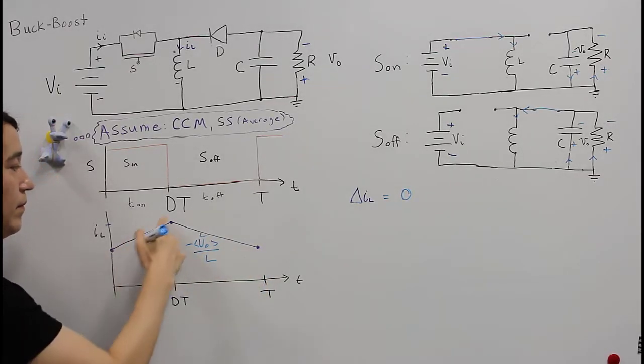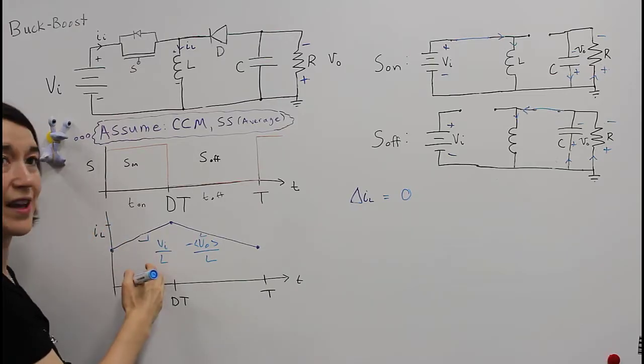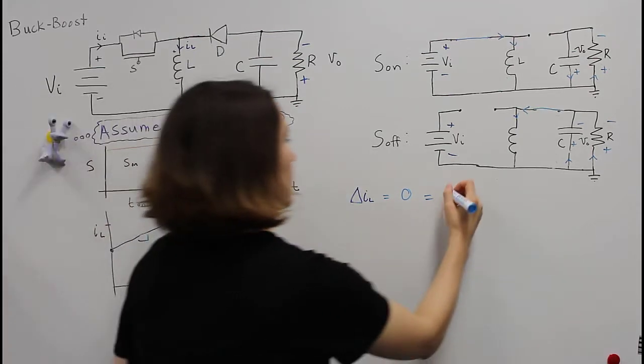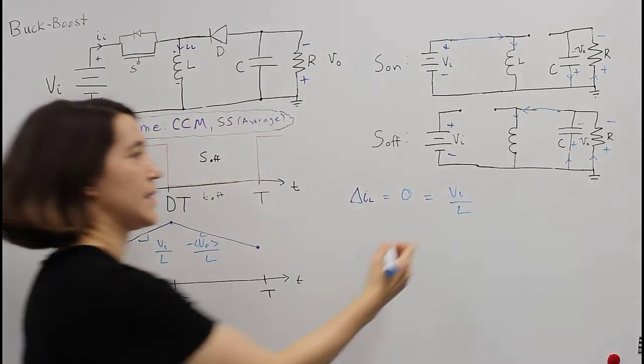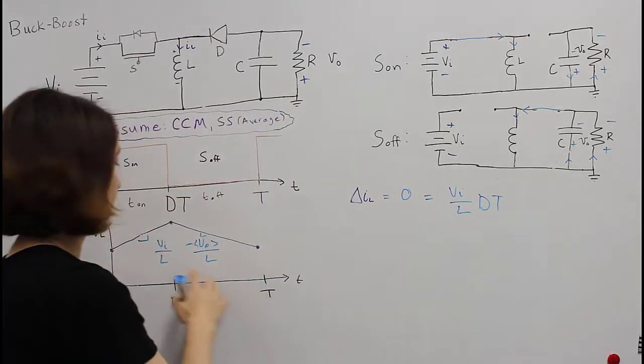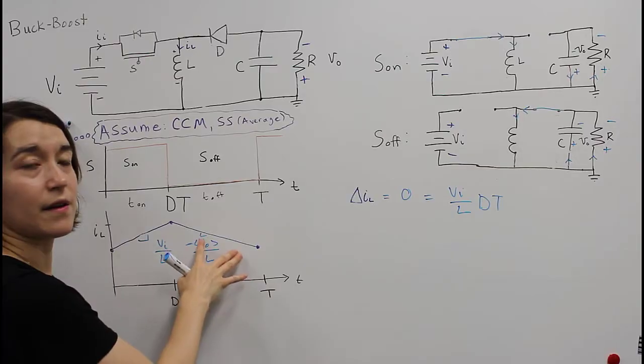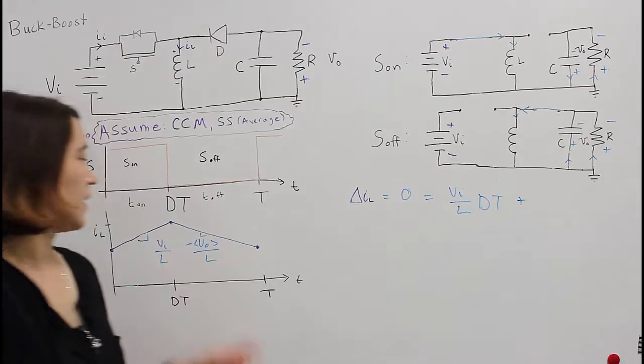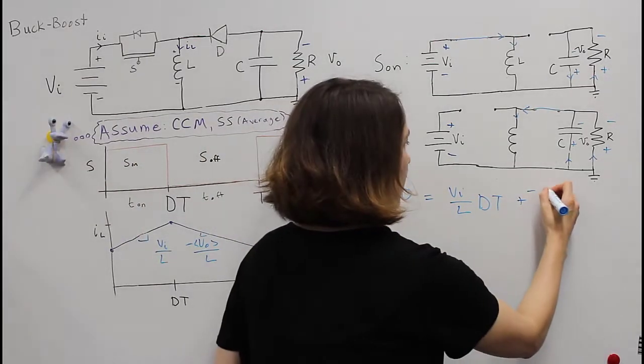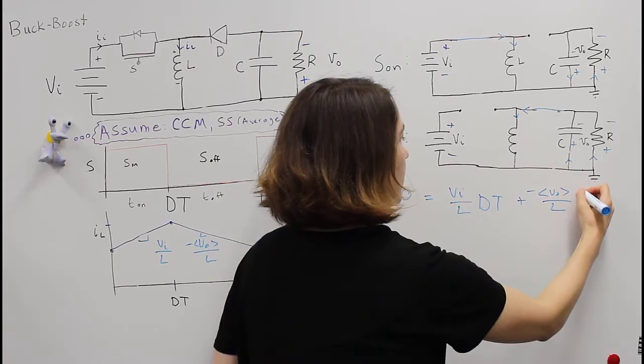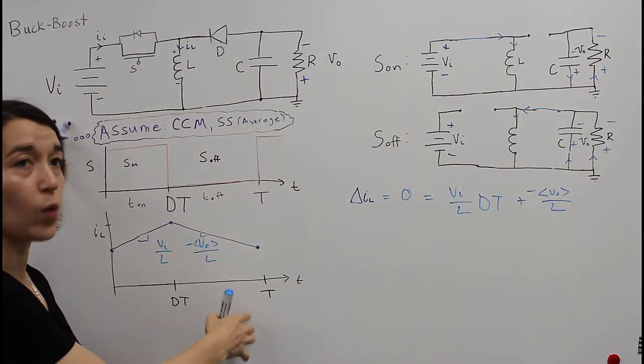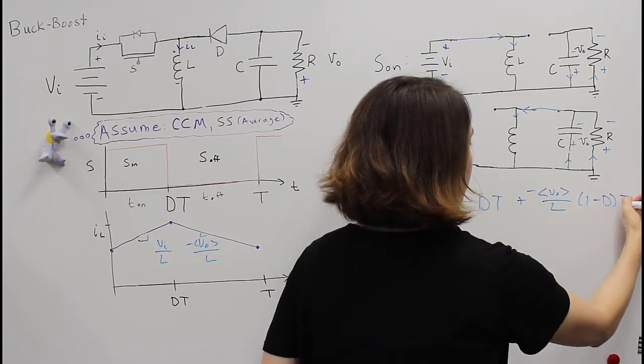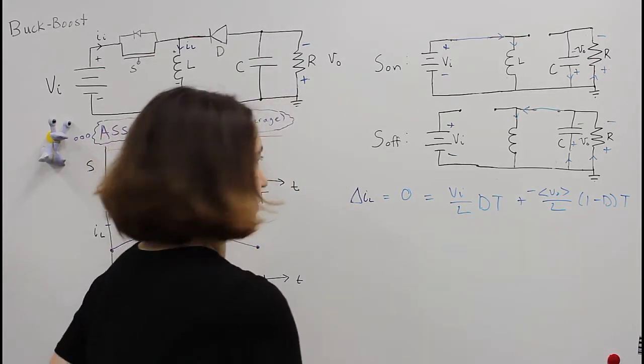So let's look first at the current change during the first phase. So we would see that that would be equal to this slope times this time difference. It's going to be Vin over L times DT. And then we have to add this period, the amount of current change during this period. So it would be plus the current change, which is going to be negative Vout, the average Vout, over L. And then this period is 1 minus D times T. So 1 minus D times T.